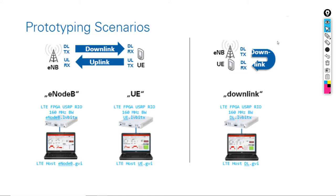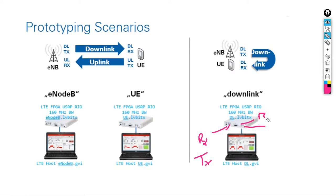Option two is to use only one USRP if you cannot afford the cost of two. Each USRP has four antennas — two can be used for reception and two for transmission. You adjust your program to have two windows — one for transmission and one for reception. You get TX and RX antennas on one side and RX and TX on the other side of the same device, all controlled from one computer.